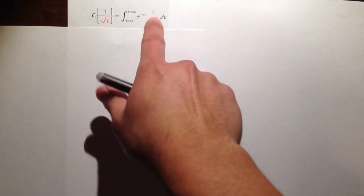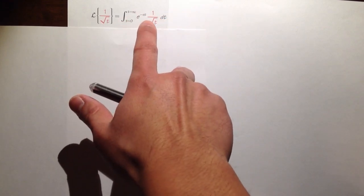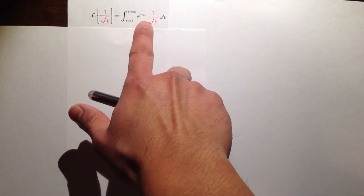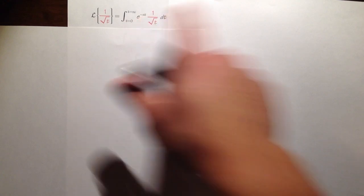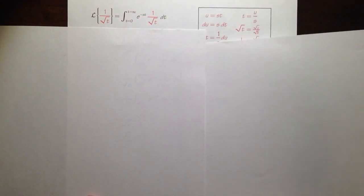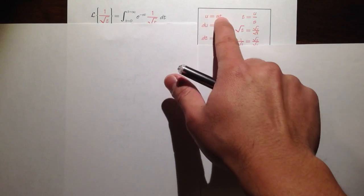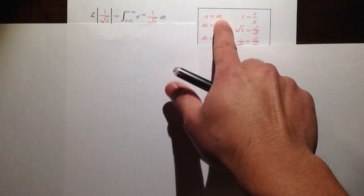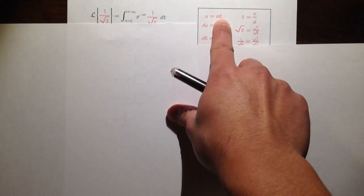We are going to first take a u-substitution to take care of this integral. I would like u to equal st. So this is what we have: u is equal to st. And remember, s is a positive constant.